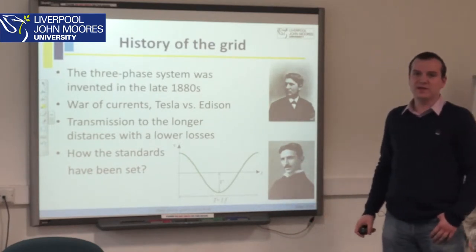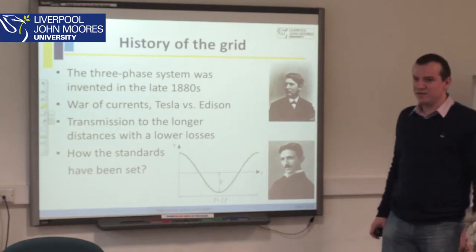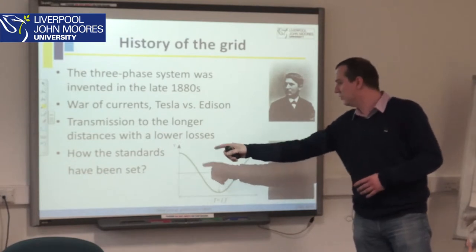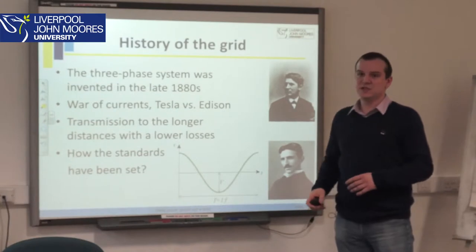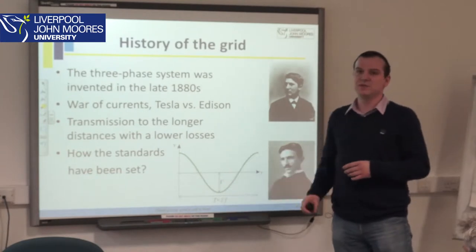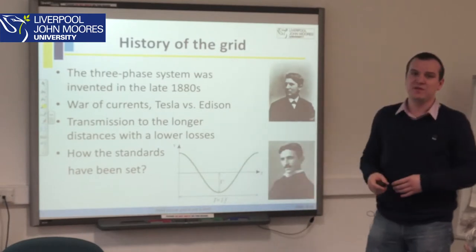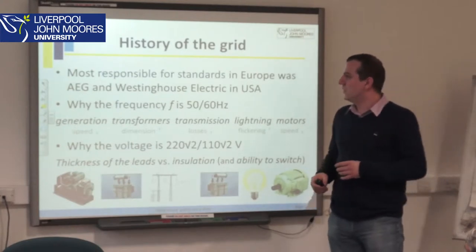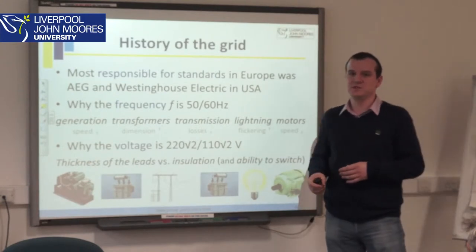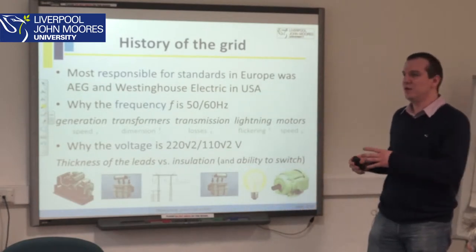From that time the grid started spreading around countries, and what we have in the mains is alternating current. It is interesting how the standards were set — for example, how the voltage was chosen to be 220 volts and why the frequency repeats 50 times per second. There are different standards in Europe and the rest of the world compared to the USA.